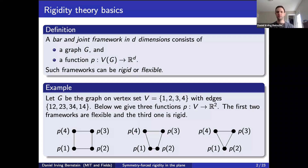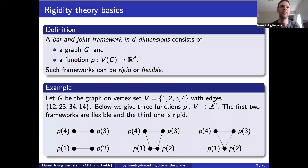I'm going to talk about symmetry-forced rigidity. This is review for most people here, but we'll go through the very basics of rigidity theory. The classical setup is a bar-and-joint framework, which is really just building a graph in d dimensions. You have a graph and a function that sends the vertices into R^d. Such frameworks can be rigid or flexible, where edges are treated as incompressible rigid bars free to rotate at their joints.